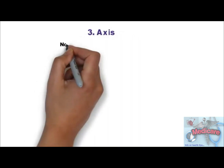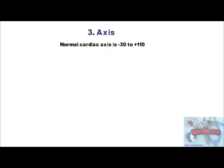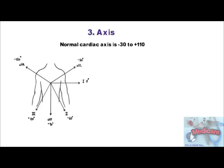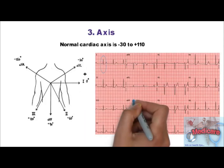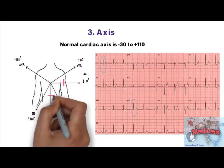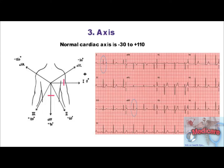Step 3 is to calculate the axis. Normal cardiac axis is from minus 30 to plus 110 degrees. To know about the axis, we first need to know about the 12-lead ECG. There are 3 bipolar leads: lead 1, lead 2, and lead 3; 3 unipolar leads — augmented voltage leads AVR, AVL, and AVF; and 6 chest leads from V1 to V6. To calculate the axis, we most commonly use perpendicular leads — lead 1 and AVF. In this ECG, the net QRS complex in lead 1 and AVF are both positive, giving a vector in the normal cardiac axis range.